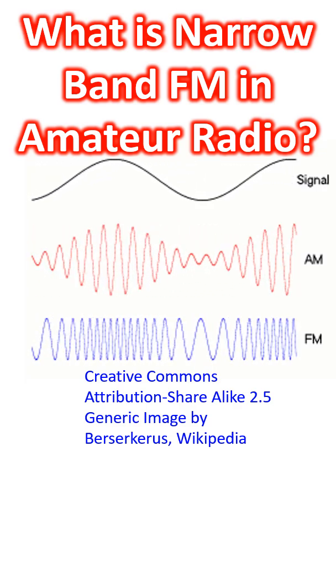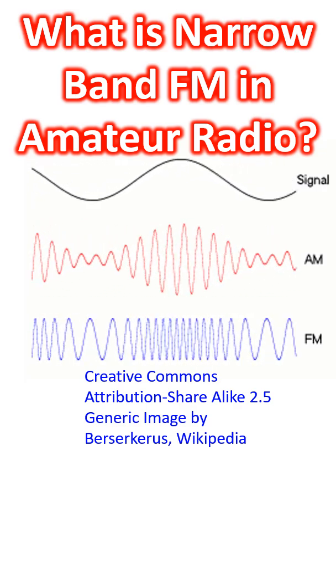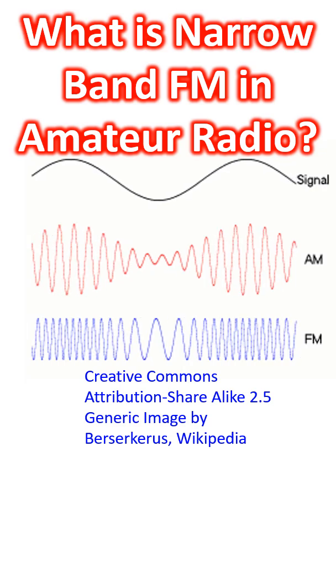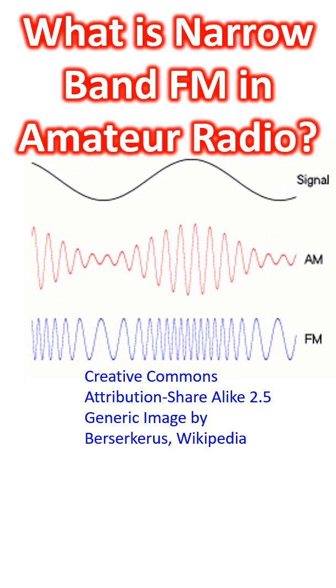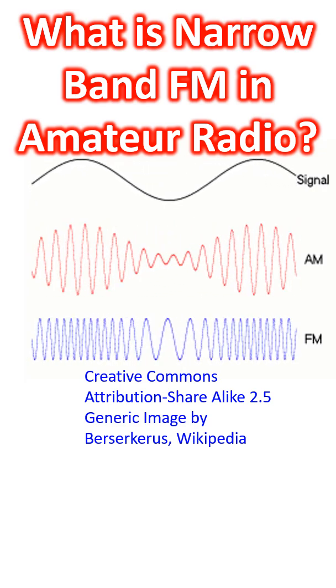The amplitude of FM waves is constant while the frequency of AM waves is constant, as you can see in the animation taken from Wikipedia.